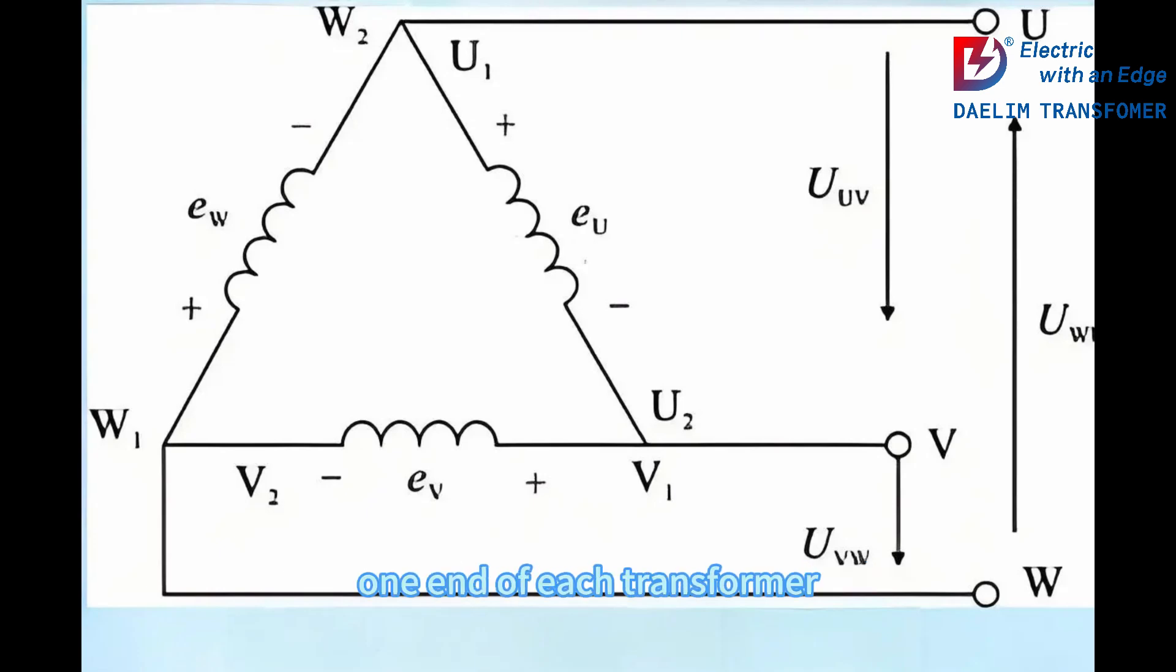In a Y connection, one end of each transformer winding connects to a common neutral point, providing a neutral for grounding and is great for mixed load types.